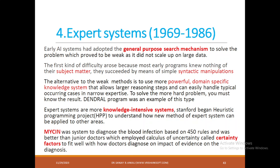Coming to the next decade, 1969 to 1986 — expert systems were developed. Early AI systems had adopted general-purpose search mechanisms that did not scale on large data and solved problems of very small size with a single goal. They succeeded only by simple syntactic manipulation and knew nothing about subject matter. The alternative was domain-specific knowledge systems allowing larger reasoning steps. The Dendral program was an example of this type.